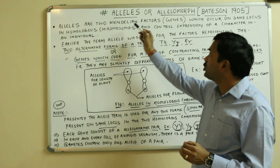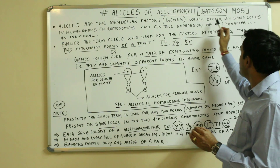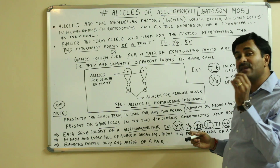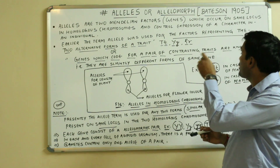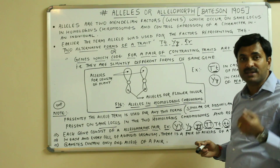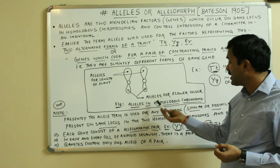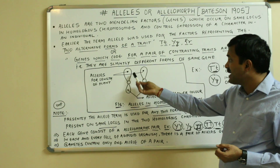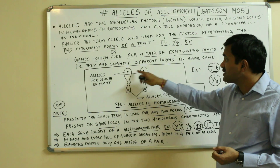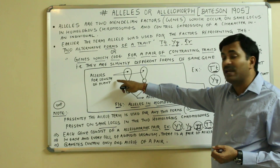Alleles are two Mendelian factors or genes which occur on the same locus in homologous chromosomes and they control the expression of a character in an individual. You can see that these are the alleles present on the same locus on the chromosome, and they are for the length of the plant.